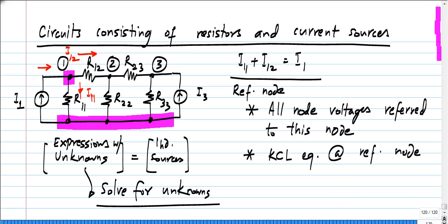In our particular circuit, this node at the bottom is the reference node and I have these three variables here V1, V2 and V3. These are the voltages with respect to the reference node.